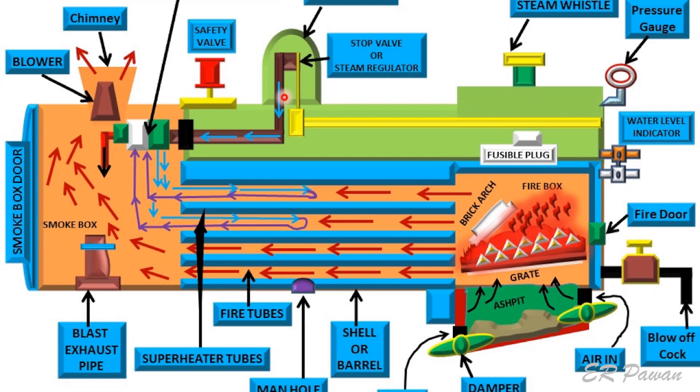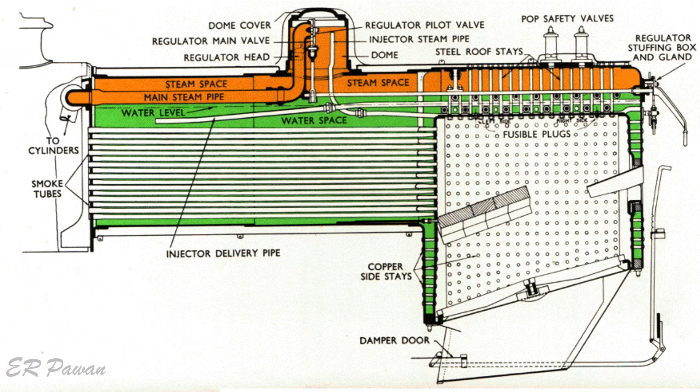It is a well-known fact that the initial cost of a boiler is a small part of total costs associated with the boiler over its lifetime. In the operational life of a boiler, major costs arise out of the fuel costs. Ensuring efficient operation of a boiler is critical to optimize fuel costs. It is not always true that a boiler will work at its rated efficiency — boilers often operate at much lower than rated efficiencies if proper efficiency monitoring is not done.